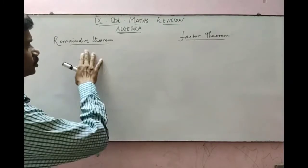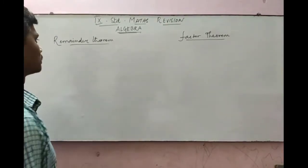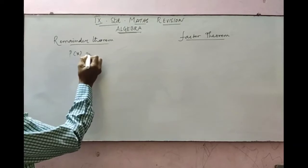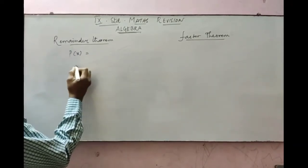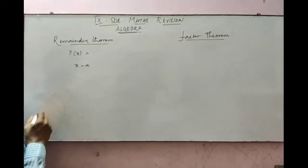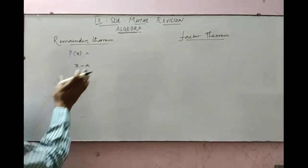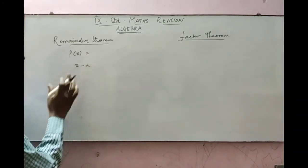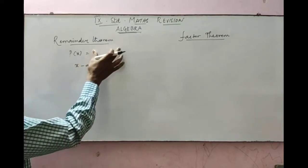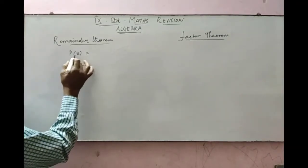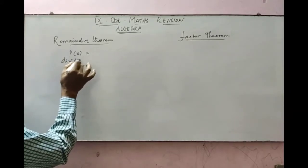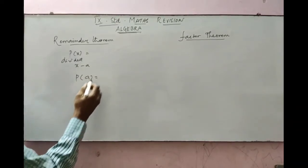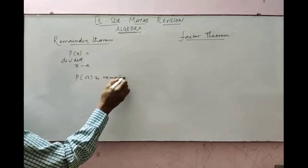Next, we are going to do sums on the remainder theorem and factor theorem. The remainder theorem states: if a polynomial P of x is given and you divide it by a monomial of the form x minus a (or x plus a, or x plus b), then the remainder you get is P of a. So P of a is the remainder of that polynomial.